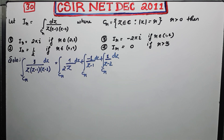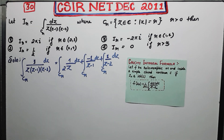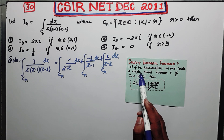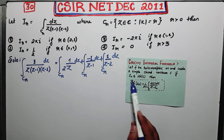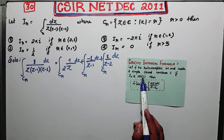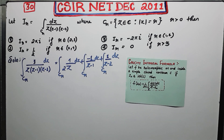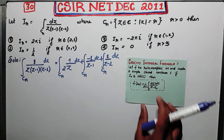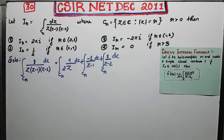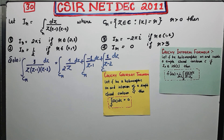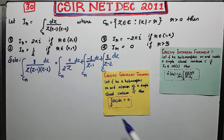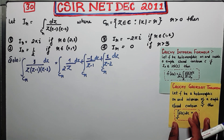Now it becomes easy to solve. I am going to show you some of the most important results in complex integration. The first is the Cauchy integral formula: if F is holomorphic on and inside a simple closed contour C, and Z₀ belongs to the interior of C, then F(Z₀) equals (1/2πi) times the integral of F(Z)/(Z − Z₀) over C. The second result is the Cauchy-Goursat theorem: if F is holomorphic on and inside a simple closed contour gamma, then its integral over gamma is 0.